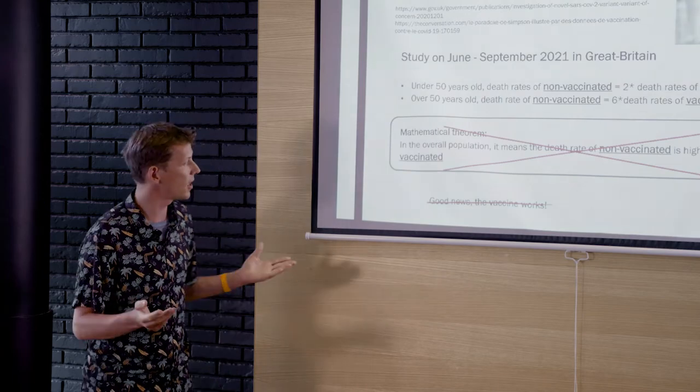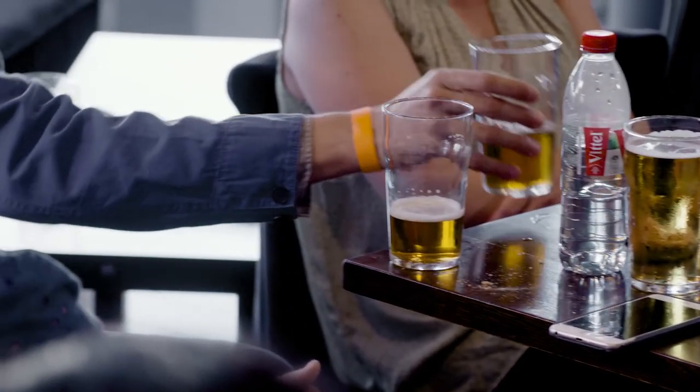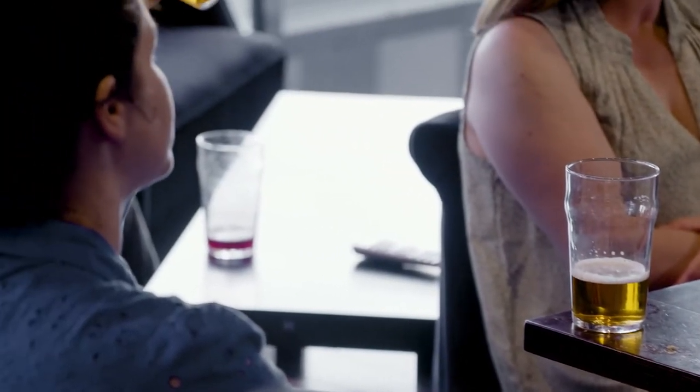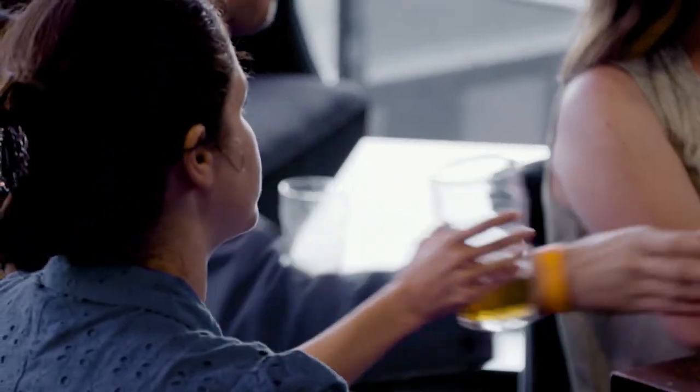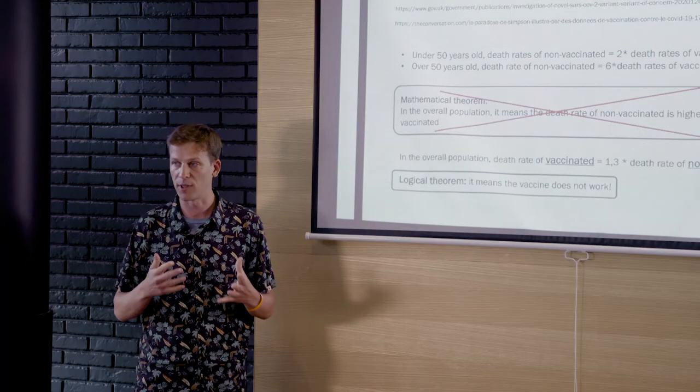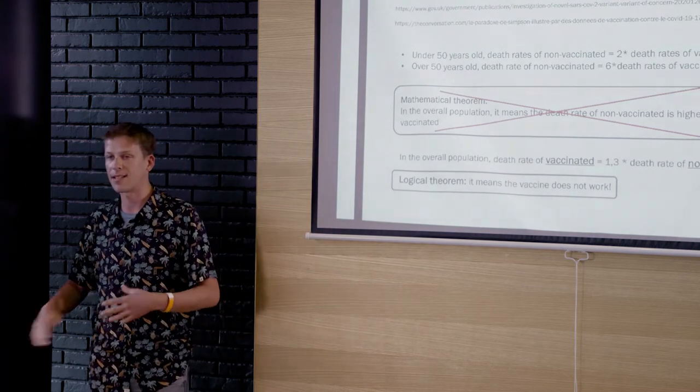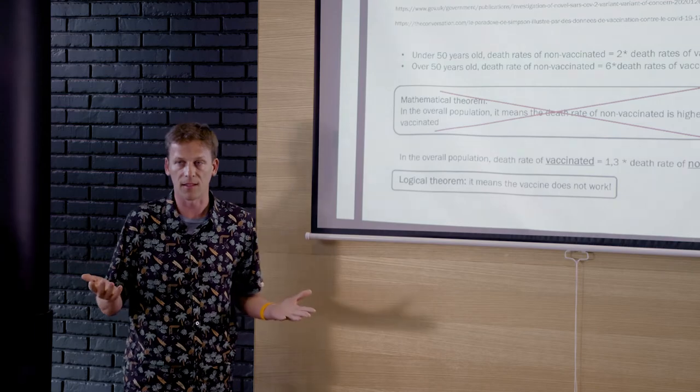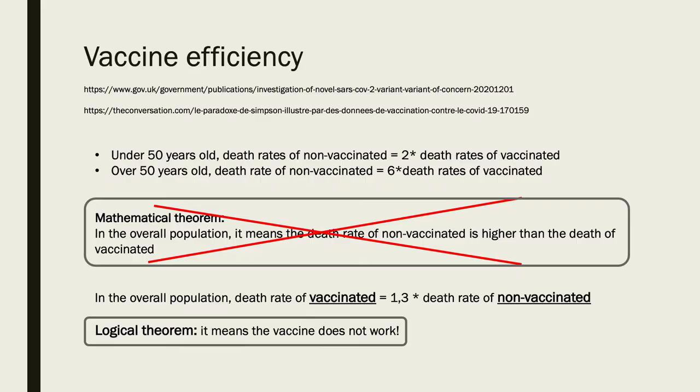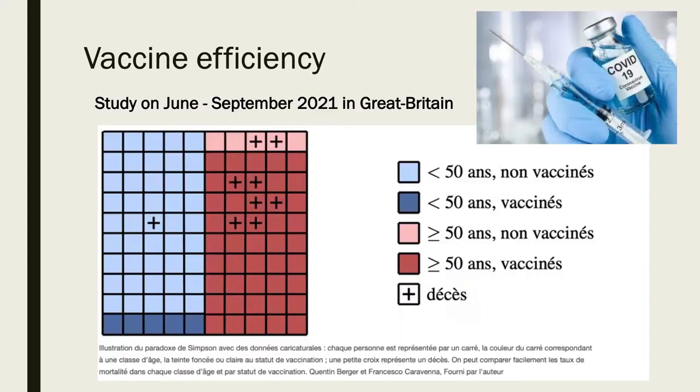So here, you might not have realized it. But if you look at the overall population, you have more chances of dying when you get vaccine. It's weird, right? It's not what you expected, maybe. So okay, let's try to accept this. Let's try to accept that the actual data says that you have more chances of dying. Then it means the vaccine does not work, right? But this is not true also, actually. So let's try to see how it works. Let's go back to the picture.